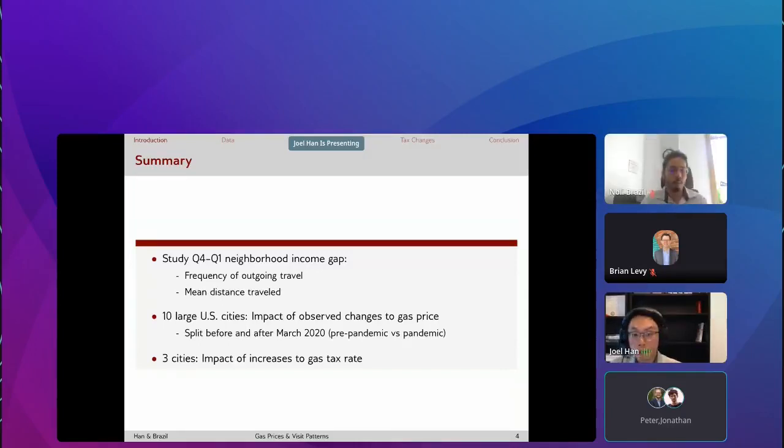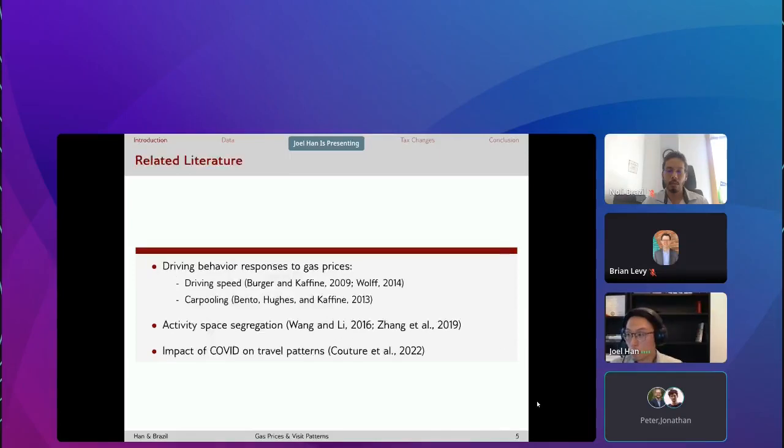A summary of what we're doing in this project. We study within a city the gap between the highest quartile of neighborhood income and the lowest quartile of neighborhood income in terms of the frequency of outgoing travel or the mean distance traveled out of these neighborhoods. For shorthand, I'm going to be calling this the Q4-Q1 gap. We merge cell phone spatial data to gas price data for 10 large U.S. cities. We look at the impact of the observed changes to city-level gas price on these travel patterns. Because our time period from 2018 to 2021 spans the COVID pandemic, we've split our analysis into before and after March of 2020.